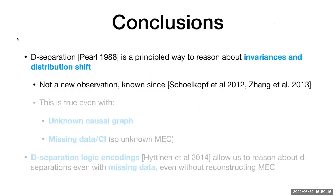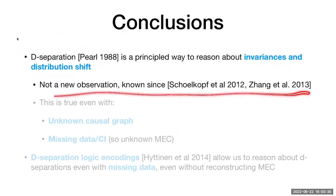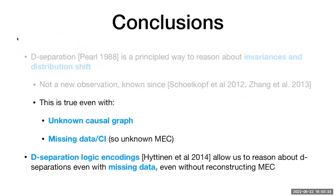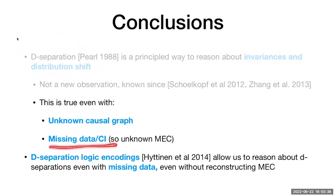In conclusion: d-separation is powerful and allows reasoning about invariances and distribution shifts — not a new observation, but also true when you don't know the graph and even with missing data. The separation logic encodings are flexible for this reasoning but have scalability issues that remain an open problem.